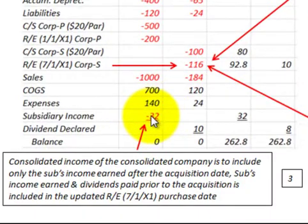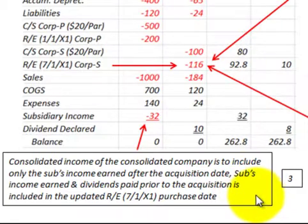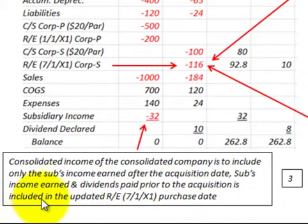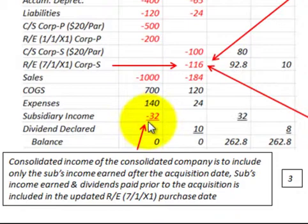The final item is the subsidiary income that we record. The consolidated income of the consolidated company is to include only the sub's income earned after the acquisition date. The sub's income earned and dividends paid prior to the acquisition are included in the updated retained earnings at the purchase date. The subsidiary income included in our consolidation is only the income earned after the purchase date.